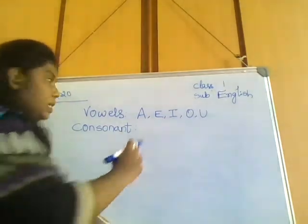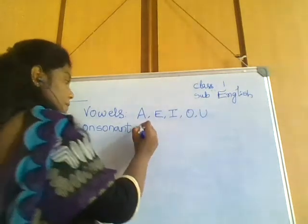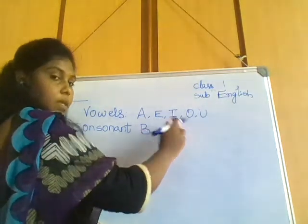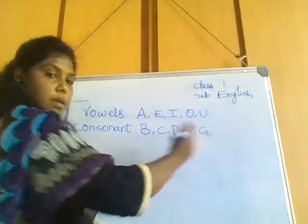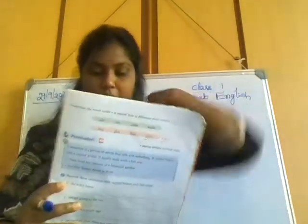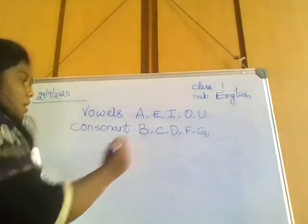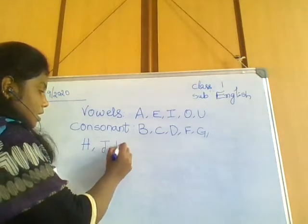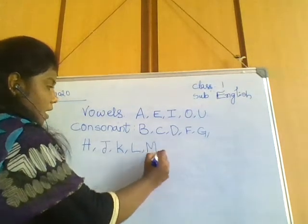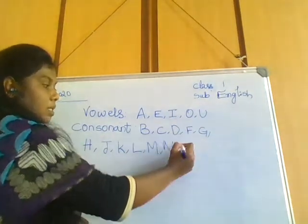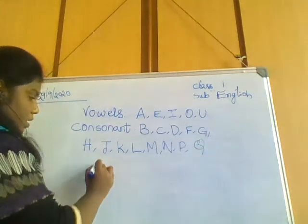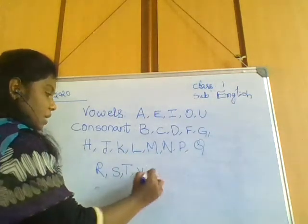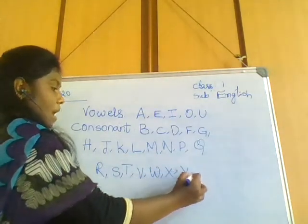What are the leftover letters? A is already a vowel. The consonants are: B, C, D, F, G, H, J, K, L, M, N, P, Q, R, S, T, V, W, X, Y, Z. O and U are also already there in vowels. These are the consonants.